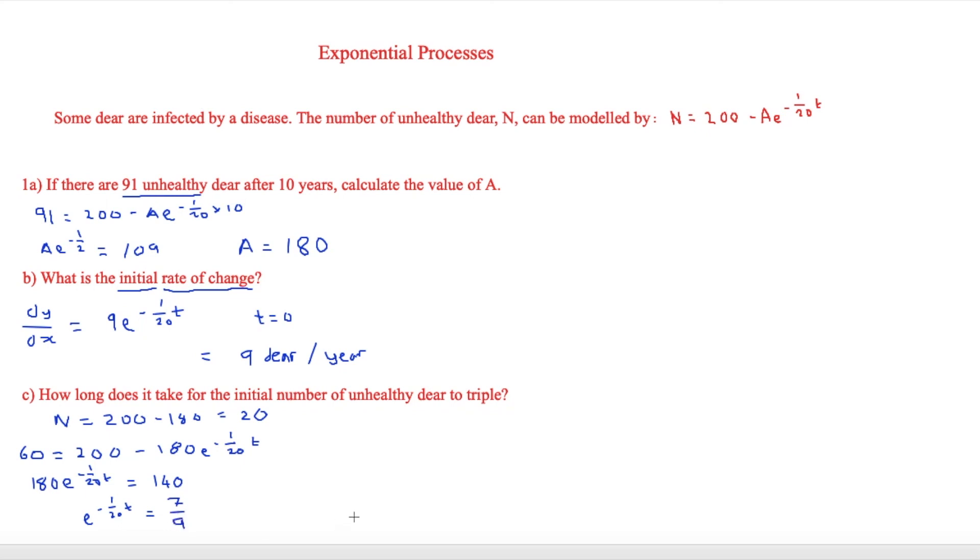In previous videos we've been looking at this idea of left to the right middle, and this is where we're starting to use logs. So log e to the 7 over 9, which is also known as ln of 7 over 9, equals minus 1 over 20t. You'll find that they're going to cancel each other out, and that will leave t equals 5 years thereabouts, a little bit of rounding there. But obviously when you get to years, it's always good to round if you can.